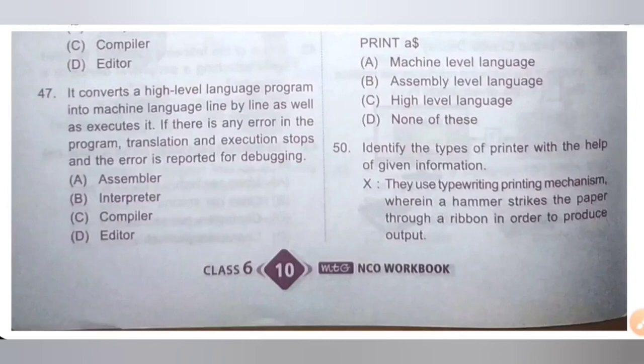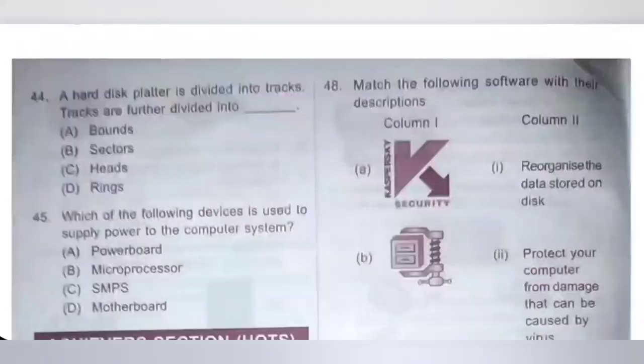Question 47: It converts a high-level language program into machine language line by line and executes it. If there is any error in the program, translation and execution stops and the error is reported for debugging. Options: A. Assembler, B. Interpreter, C. Compiler, D. Editor. The correct answer is Option B — Interpreter.